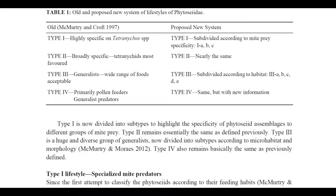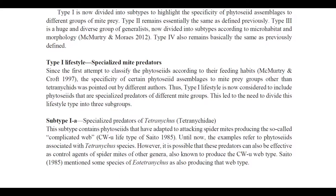This table helpfully organizes the different types. Specificity of prey increases with the type number, and in this proposed new system the different types are subdivided, giving greater granularity of information and allowing for better perspective and more precise usage of certain predatory mites. Even understanding the basic general concepts of each type is very valuable. The Type 1 lifestyle is described as follows: since the first attempt to classify phytoseiids according to their feeding habits, the specificity of certain phytoseiid assemblages to mite prey groups other than tetranychids was pointed out by different authors.